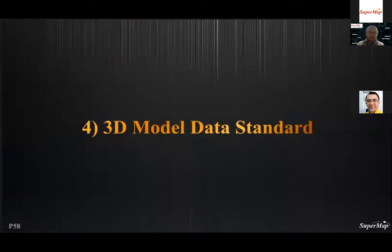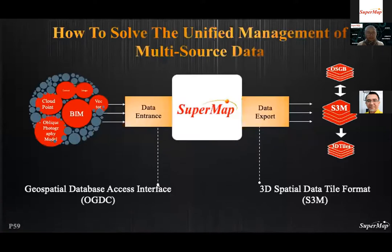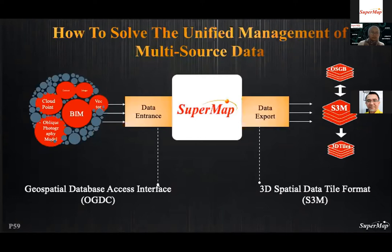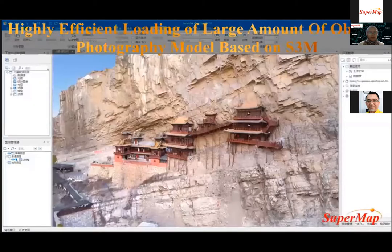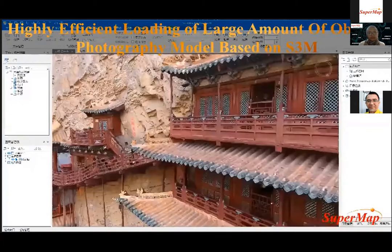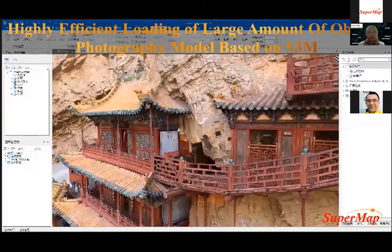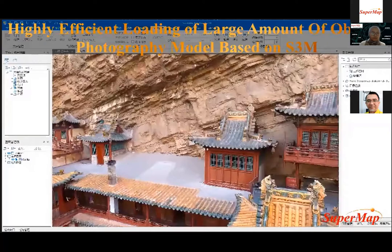S3M is a data format designed for massive 3D model data transmission, meeting user needs for 3D data transmission and rendering on different terminals — mobile, web, and desktop — with an efficient, scalable, and collaborative data specification. Key features and advantages of S3M include support for multiple data types, efficient mapping of massive data, simple format for easy transfer, support for monomer queries, quick loading on graphics cards, cross-terminal support, and good scalability. A video shows rapid generation of 3D model data in S3M format using DJI UAV and DJI Terra modeling software, then displayed on the SuperMap GIS platform.